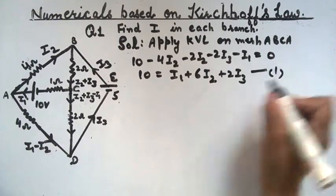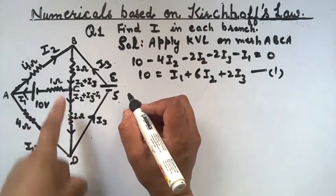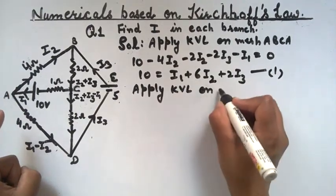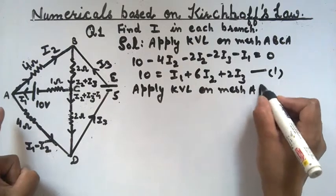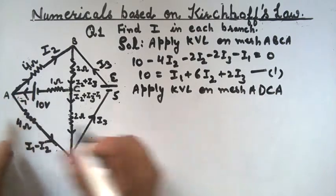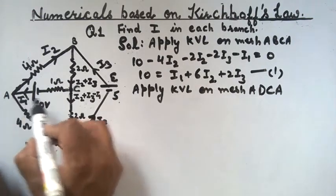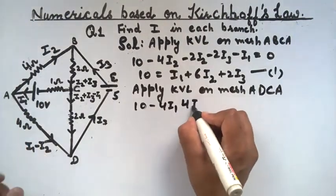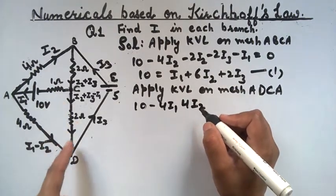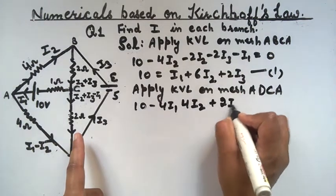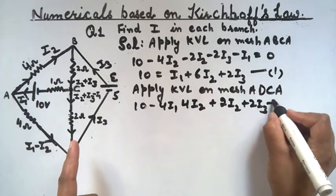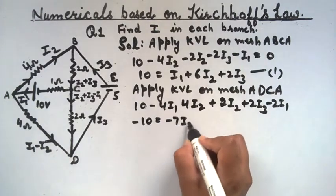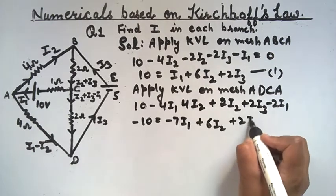Now consider mesh ADCA and apply KVL. Here also there is a rise in potential, so: 10 minus 4I1 plus 4I2, then movement is opposite giving plus 2I2 plus 2I3 minus 2I1. The final equation is: minus 10 equals minus 7I1 plus 6I2 plus 2I3. Give this equation number 2.